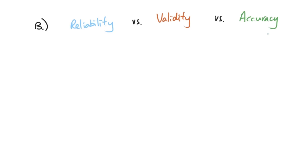The next thing we're going to look at is the difference between three words that often confuse people in exam questions. For any experimental questions, they sometimes ask you to suggest different ways to improve the reliability, validity, or accuracy of your data. People tend to mix them up completely, but it's really important to recognize they are completely different things. Here are some answers you could include to help you get the marks.